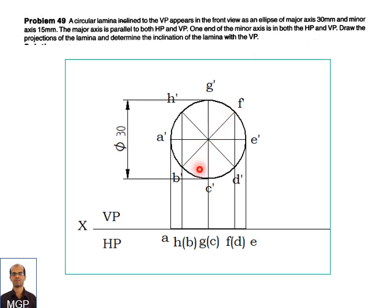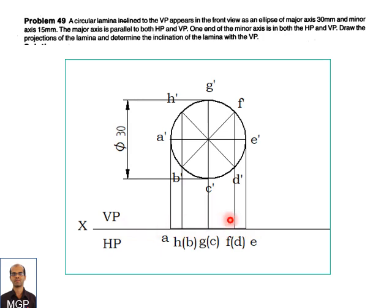Initially, we assume a circular lamina of 30 mm diameter, with the surface parallel to VP. In the front view, you can see the true shape of the lamina as a circle. When the surface is parallel to VP, in the top view, you can see a horizontal straight line which is parallel to the XY line.